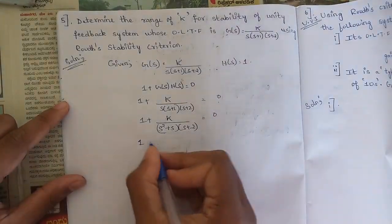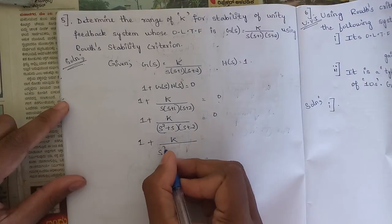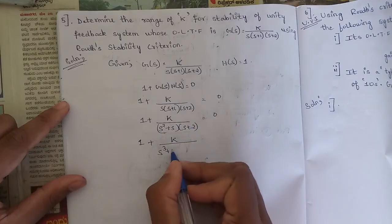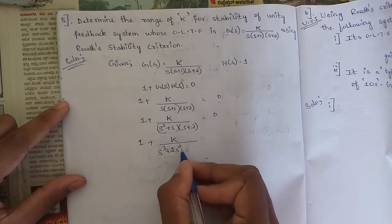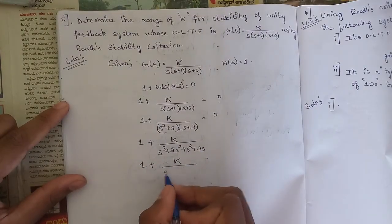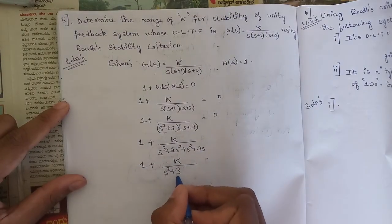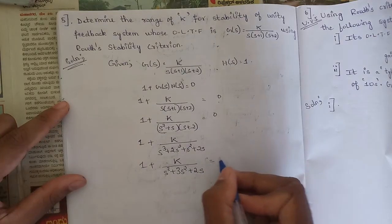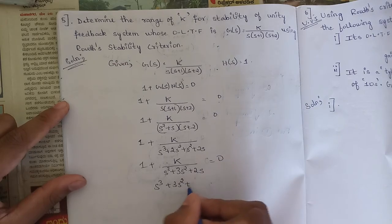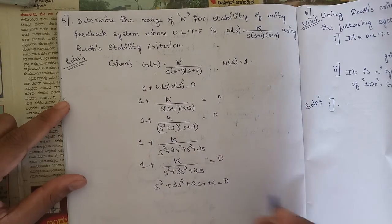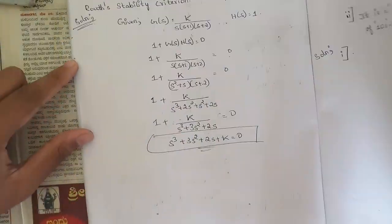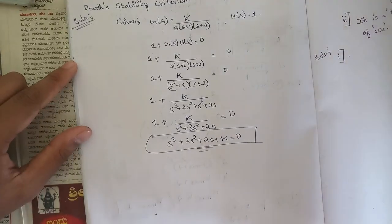So we get 1 + K / (s³ + 3s² + 2s) = 0. Taking the LCM, the characteristic equation becomes: s³ + 3s² + 2s + K = 0.